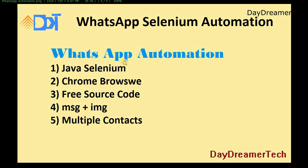So let's start today's video. The agenda for today's video is WhatsApp automation using Java, Selenium, Chrome browser, source code that I am giving to you, message placement, and multiple contacts. Suppose I want to send one message to a hundred contacts that are in my contact list — I can do that.